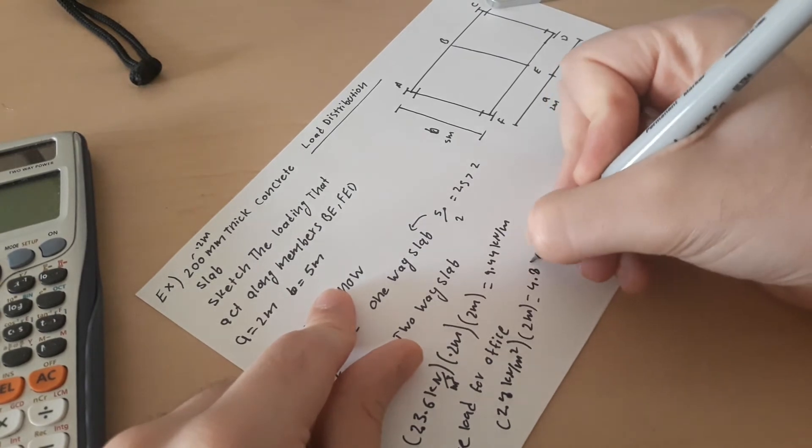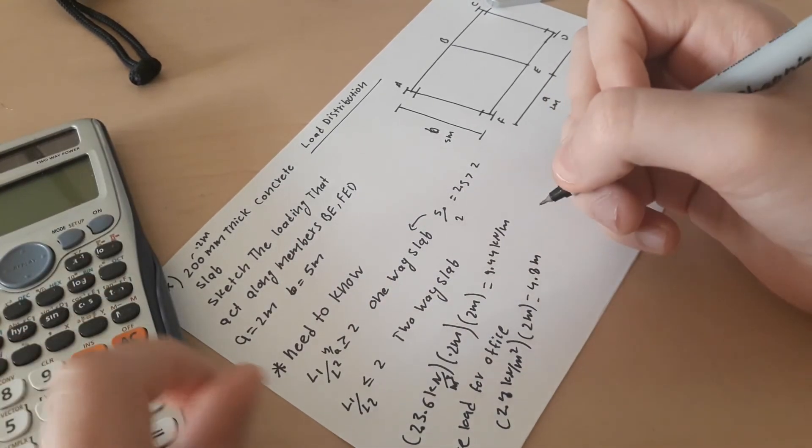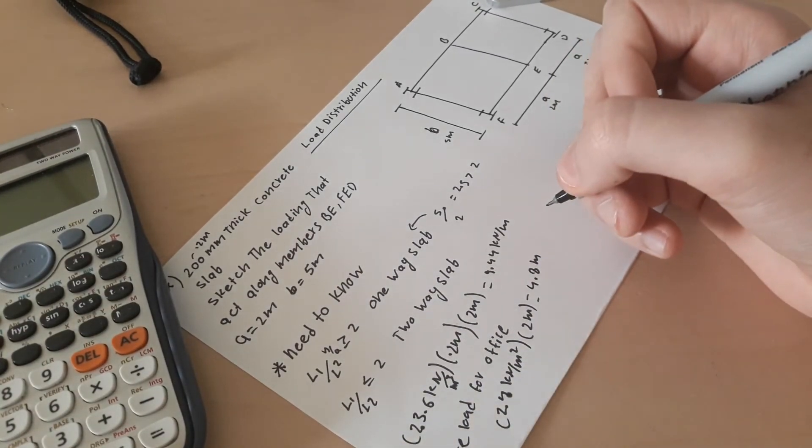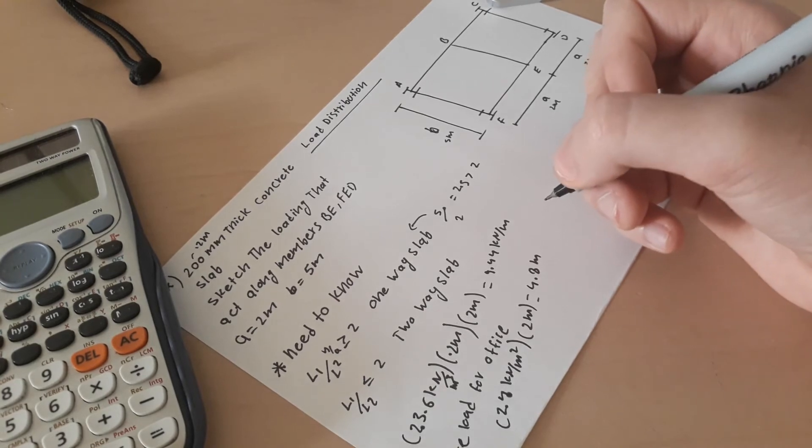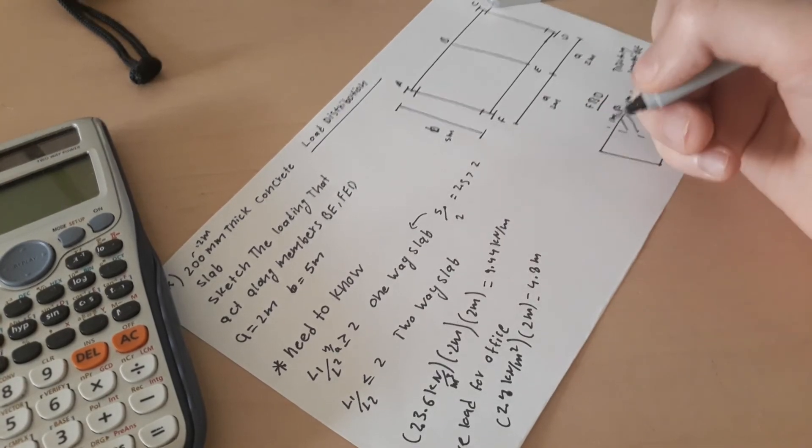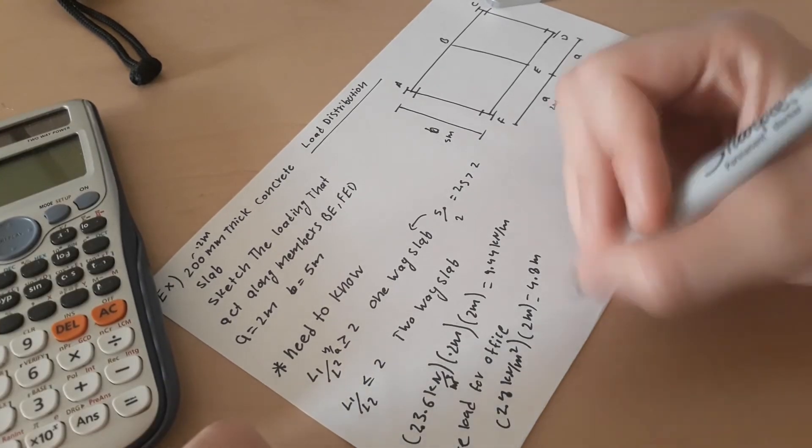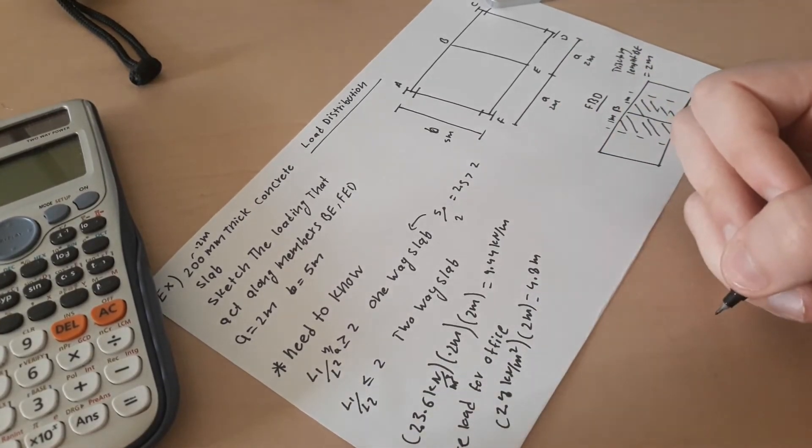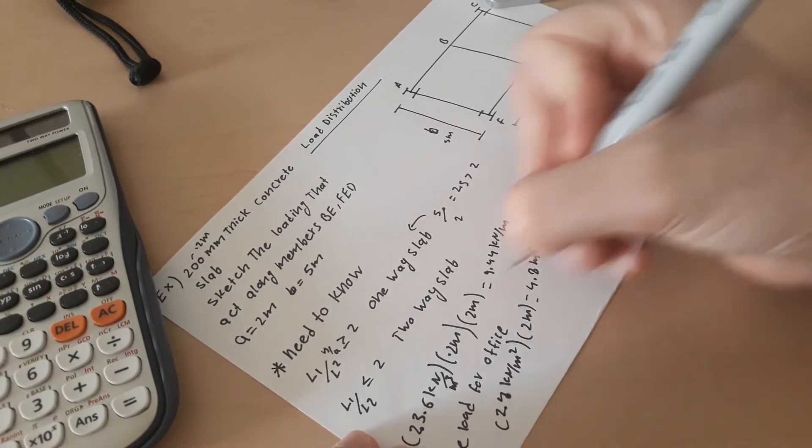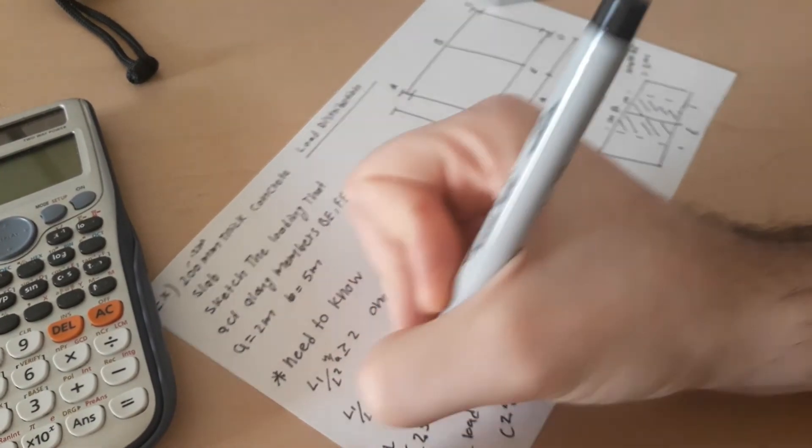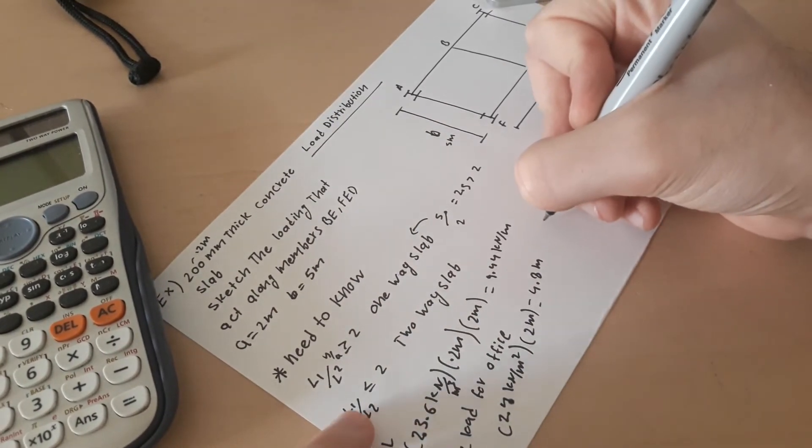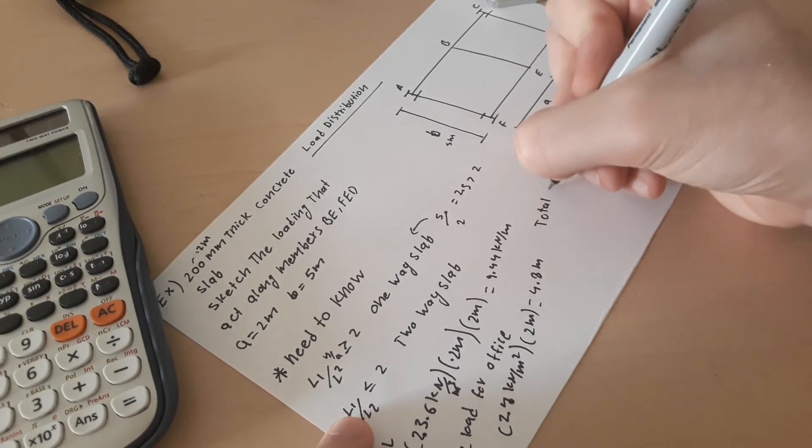Always do the calculation with the calculator because sometimes when you do it in your mind you make minor mistakes. Okay, now we need to calculate the total load, which was the dead load and this is the live load. So we need to calculate the total load which equals to dead load plus live load.